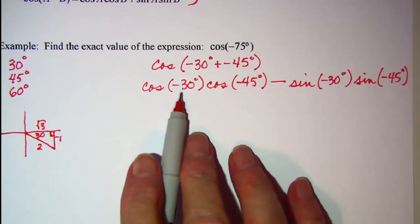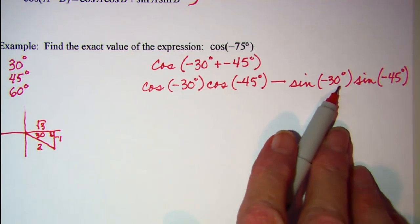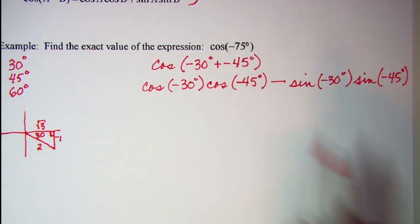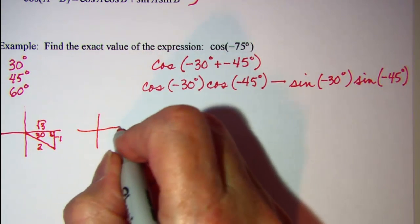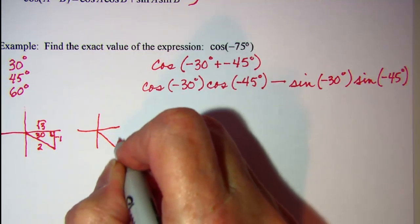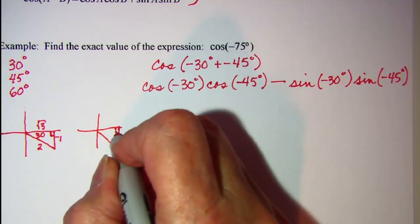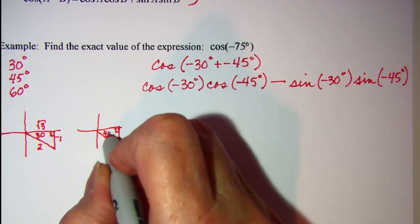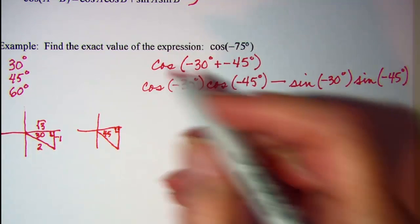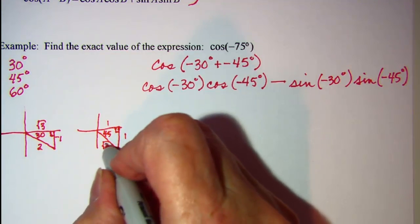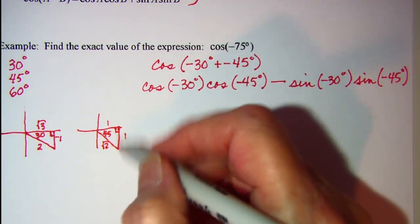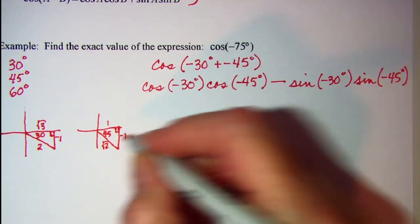That'll take care of these for the negative 30. Then I need one for the negative 45, so it too is going to be in quadrant 4, 45 degree reference angle. And we use 1, 1, root 2 on the sides, and the 1 below the x-axis will be a negative.